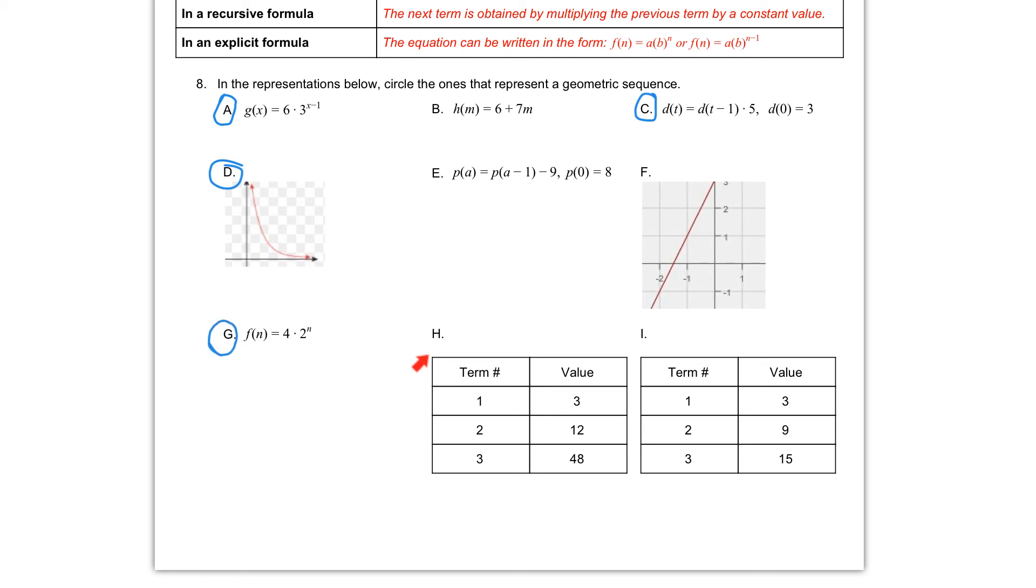In letter H, letter H we have our first term is 3, second term is 12, third term is 48. It shows that we are multiplying by 4 each time. 3 times 4 is 12, 12 times 4 is 48.